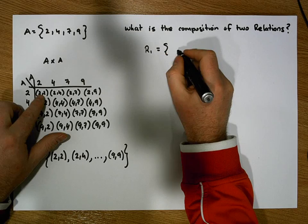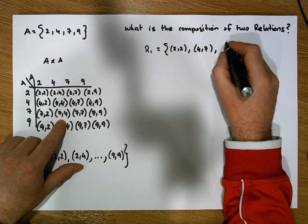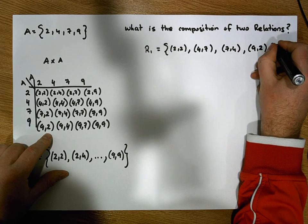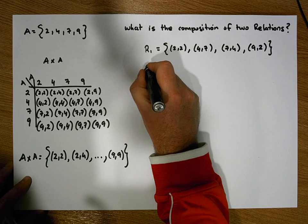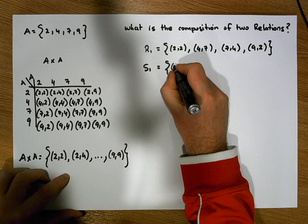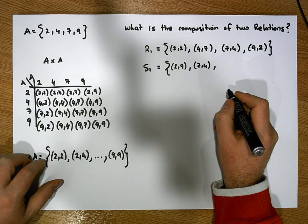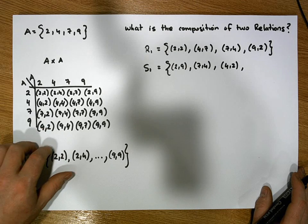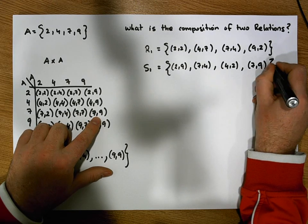Let's choose two relations. R1 takes 2 to 2, it takes 4 to 7, it takes 7 to 4, and it takes 9 to 2. Let's create another relation called S1: it takes 2 to 9, it takes 7 to 4, it takes 4 to 2, and it takes 7 to 9.